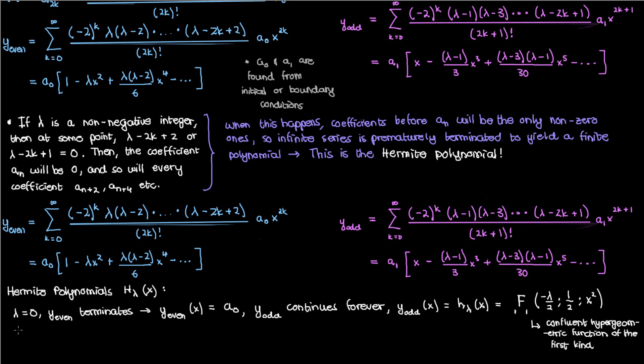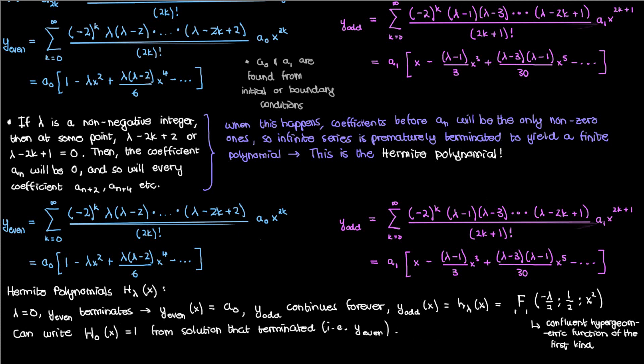We don't have to worry too much about this though, it's a mouthful anyway. Now from the solution that terminated, the y_even, we can write the 0 degree Hermite polynomial as H_0(x) = 1. a_0 is just a constant multiple of that.